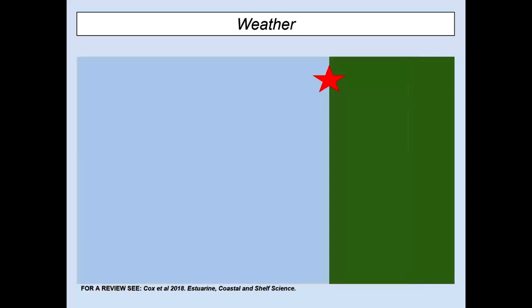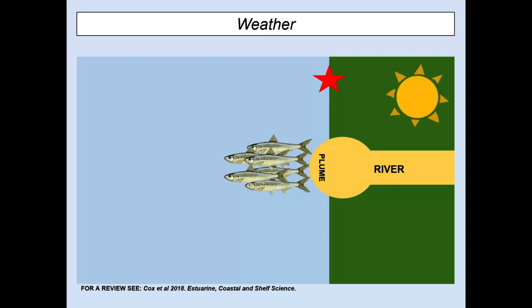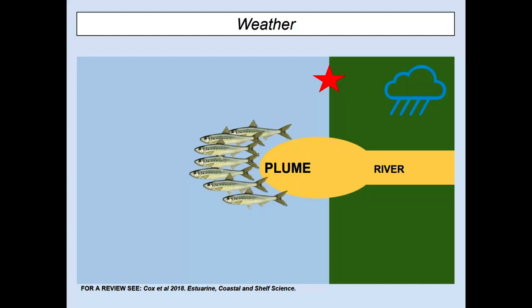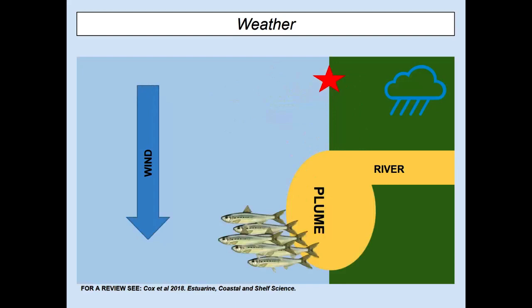Wind and rain can also act together. In dry, sunny conditions, fish may aggregate around the edge of a freshwater plume. When it rains, that plume expands. If a strong wind then comes in, that plume can be forced into your study site — and when the wind switches direction, it goes the other way. So you get these two different forces acting in combination to determine the conditions at a given location.